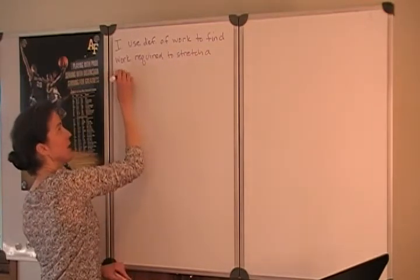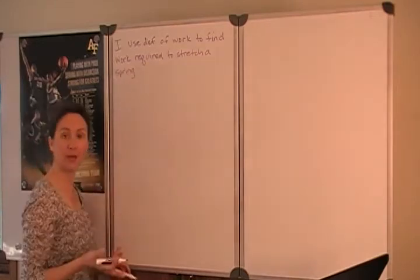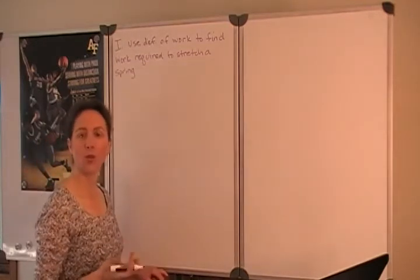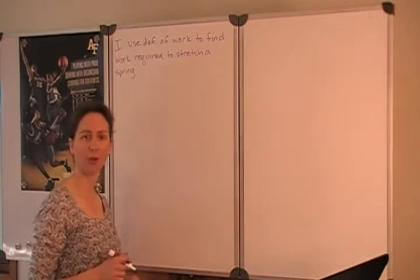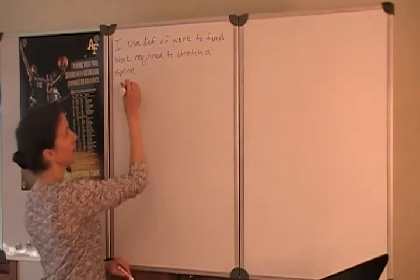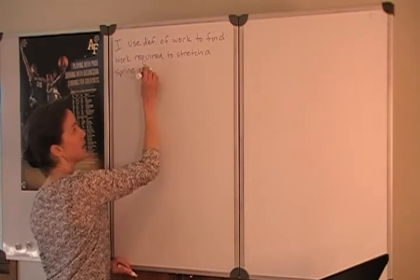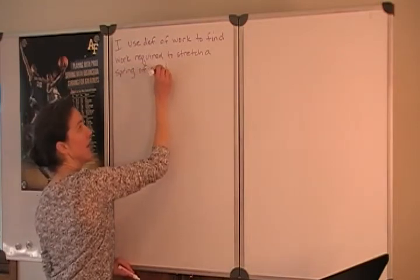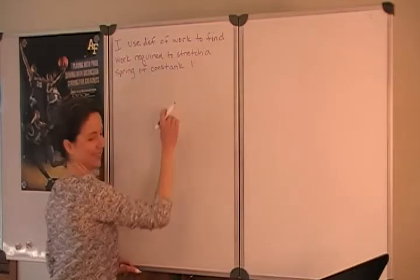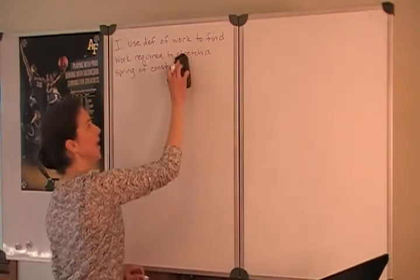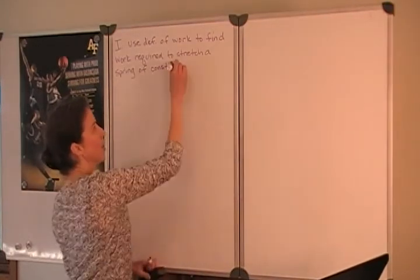Now, not all springs are the same. You might think of a slinky, which is very easy to stretch, or the spring in a car suspension, which requires much more force to stretch a smaller distance. Springs are characterized by what's called the spring constant, and the variable or symbol K is often used to denote that property.